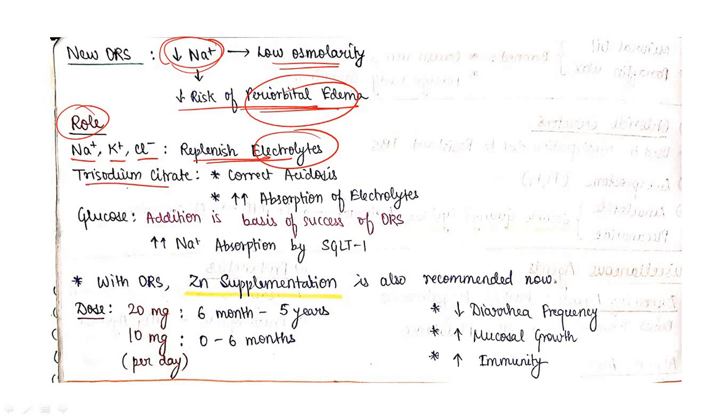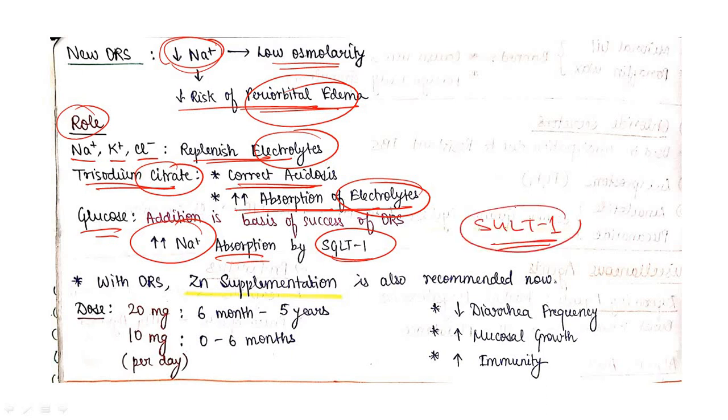What is the role of different components? Sodium, potassium, and chloride replace electrolytes. Trisodium citrate corrects acidosis and increases absorption of electrolytes. Glucose increases sodium absorption by SGLT1. Glucose addition is the basis of success of ORS.